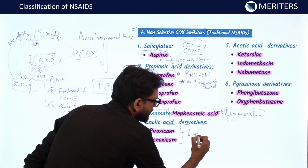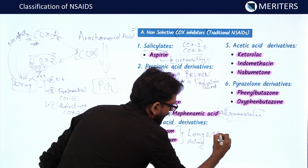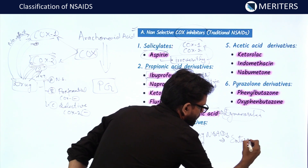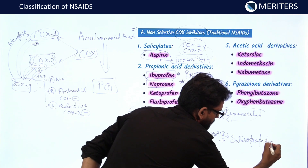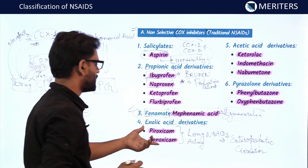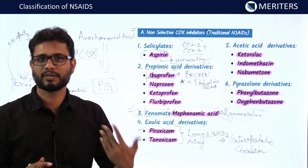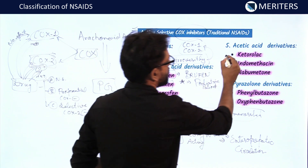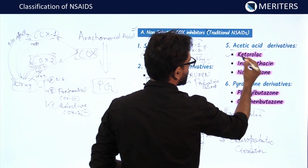Piroxicam and tenoxicam are long-acting NSAIDs due to a special type of metabolism known as enterohepatic circulation. Because of this enterohepatic circulation, these drugs are long-acting. So if asked which NSAID is longest acting, piroxicam and tenoxicam are the answer. The fifth category is the acetic acid derivatives: ketorolac, indomethacin, and nabumetone.